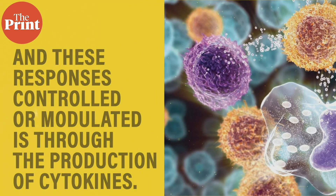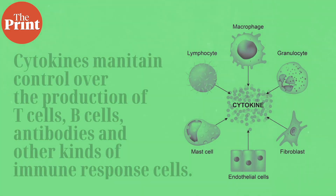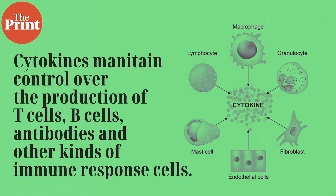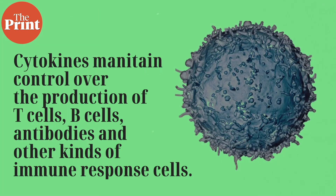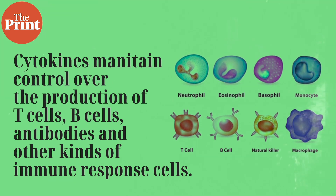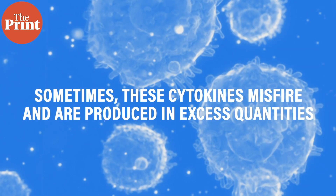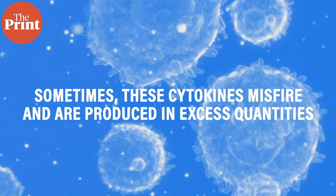The specific mechanism through which the innate response is controlled and modulated is through the production of cytokines. Cytokines are small proteins that perform signaling between immune system cells. It is cytokines that determine how much the immune system should keep going, essentially maintaining control over the production of T-cells, B-cells, antibodies, and other immune response cells, and the signaling between them.